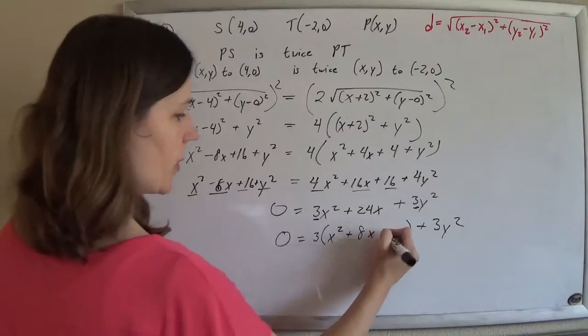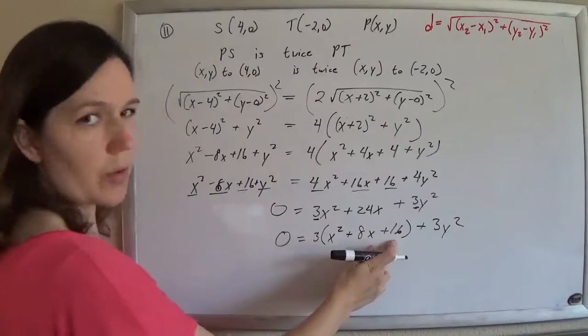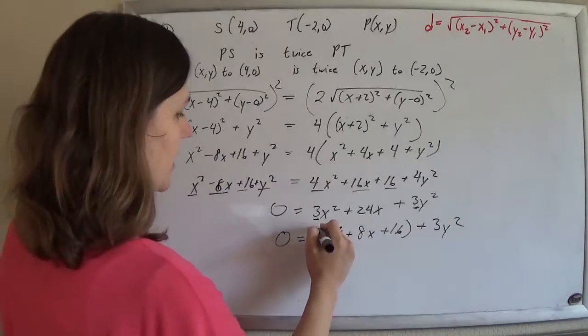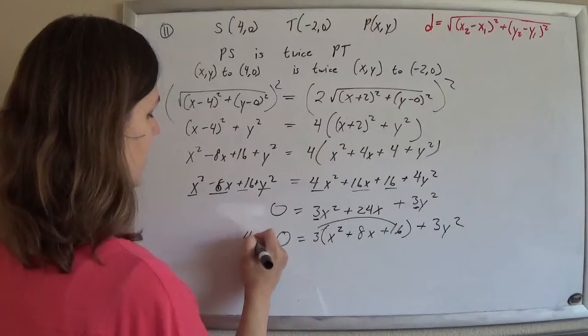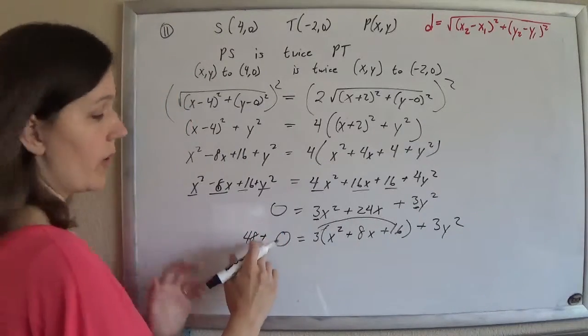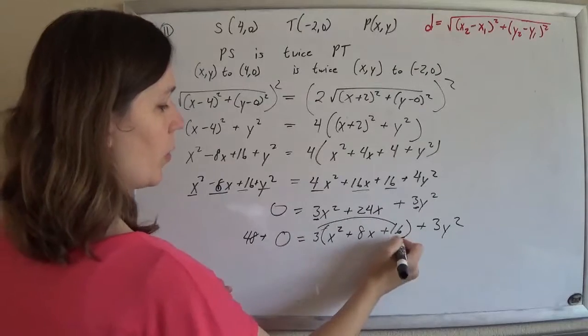And so now I'm going to complete the square here by halving and squaring that number. So half of 8 is 4, squared is 16. But I can't just go around adding 16 to both sides. I've got to balance what I did. And I didn't really add 16, I added 3 times 16, so I have to add a 48 over on the left side to balance out what I added.